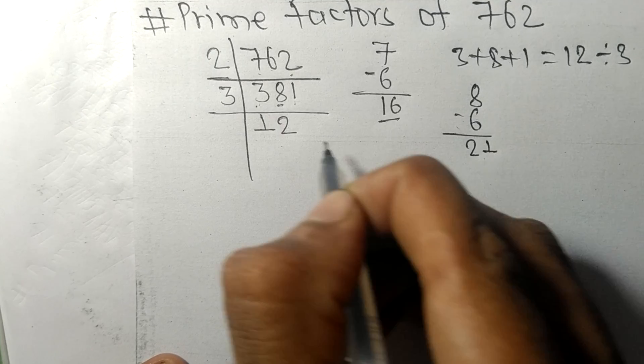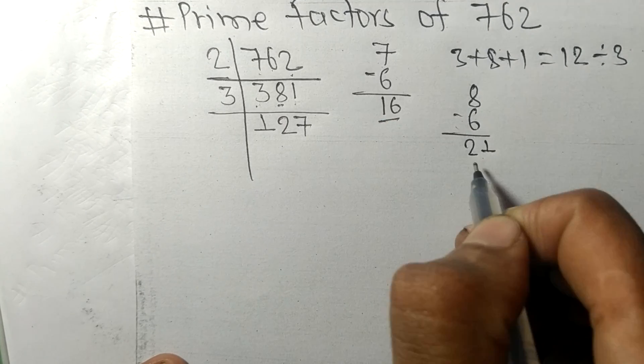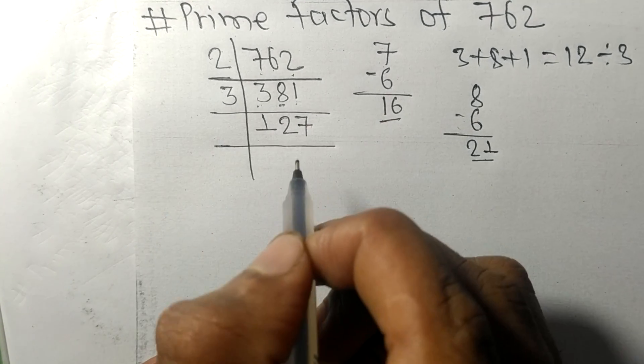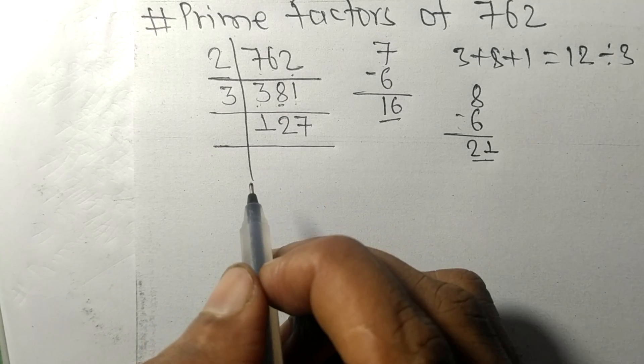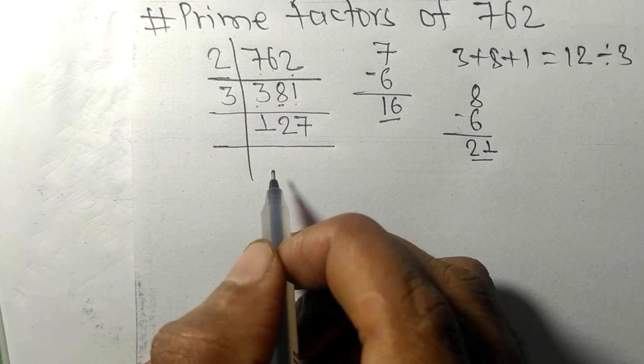And this one, 21, 3 times 7 means 21. So now we got 127, which is a prime number.